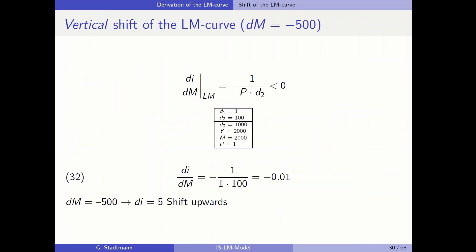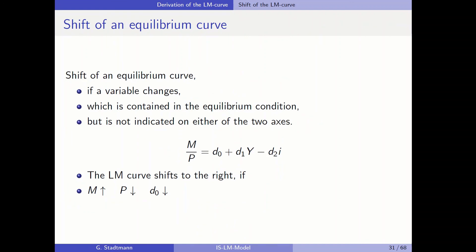On the last slide of this subchapter, we have the general definition: an equilibrium curve shifts when a variable included in the equilibrium condition changes but is not displayed on either axis. The LM curve shifts to the right if nominal money supply increases, if prices decrease, or if the autonomous component of money demand decreases.